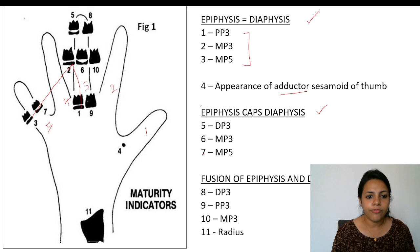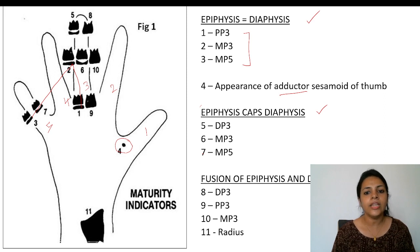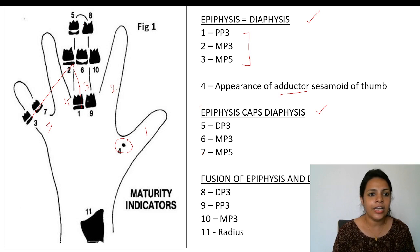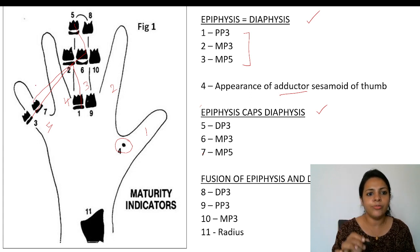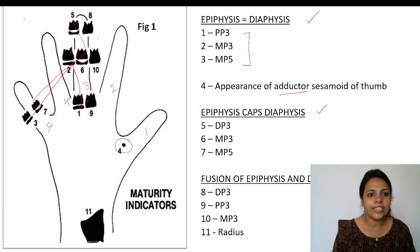The fourth stage is the appearance of the adductor sesamoid of the thumb. Then comes the next grouping where the epiphysis caps the diaphysis — stages five, six, and seven. These are DP3 (distal phalanx of third finger), MP3 (middle phalanx of third finger), and MP5 (middle phalanx of fifth finger).